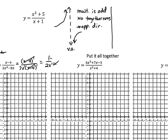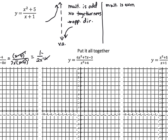Now, if the multiplicity is even, and I had a vertical asymptote here, then there is togetherness. What that means is that on either side of the vertical asymptote, they travel together — same direction. So if this side goes down, then the other side goes the same way, which is down.